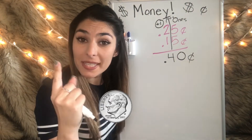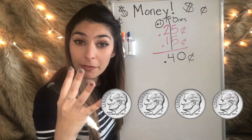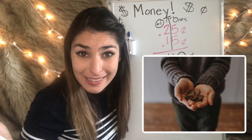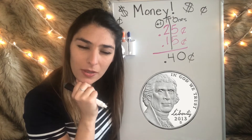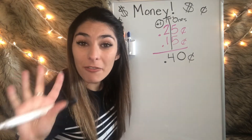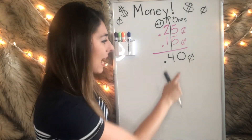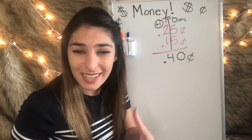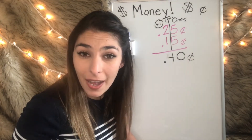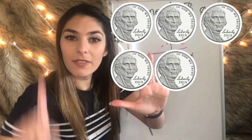So I might give her four dimes — ten, twenty, thirty, forty. I can also give her 40 pennies. How many nickels would I use though? A nickel is worth five cents, so if I wanted to see how many nickels I'd have to use to purchase that 40 cents, all I'd have to do is count by fives: five, ten, fifteen, twenty, twenty-five, thirty, thirty-five, forty. So how many nickels would I need? Eight.